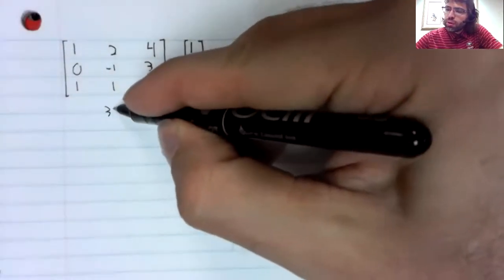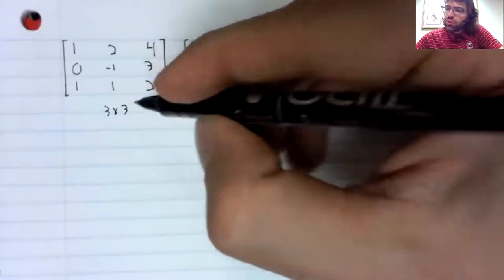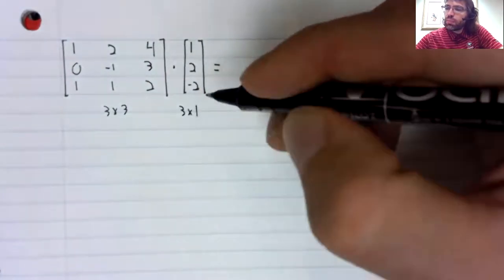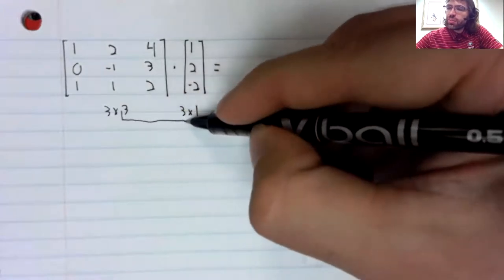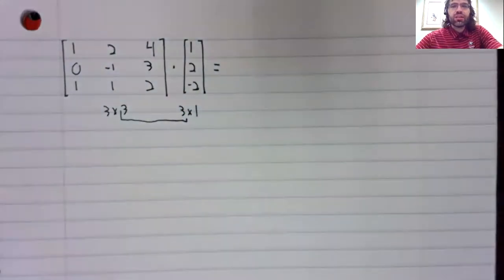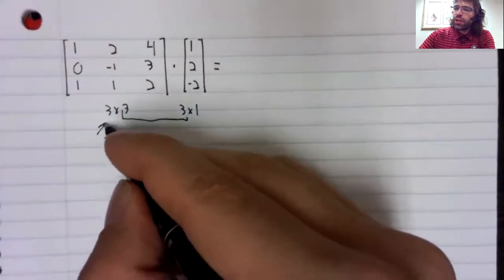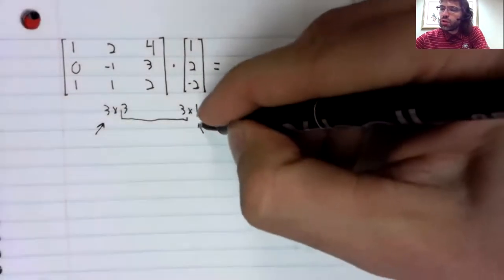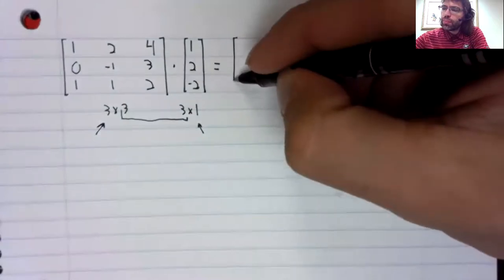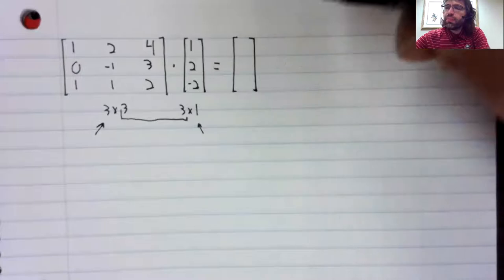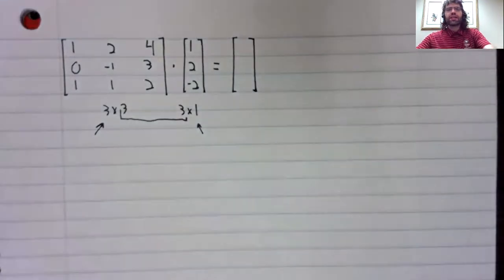Before we do anything else, let's observe that we can multiply this matrix by this vector. The dimensions match, and the result will be a three by one vector.